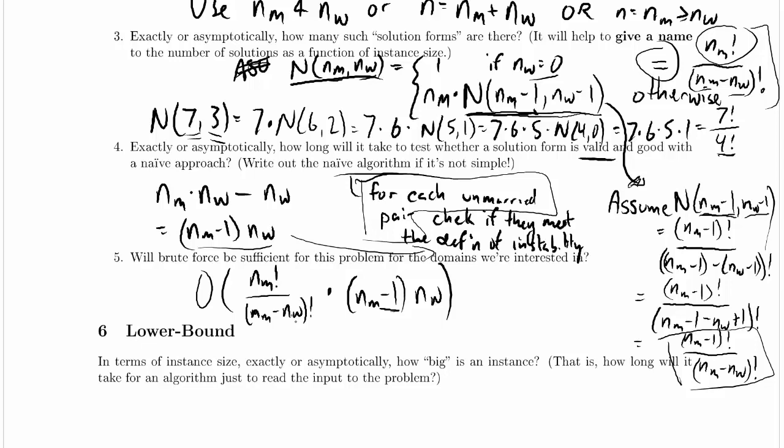In particular, if NW is large, say if NW is equal to NM, this goes to 0, and 0 factorial is equal to 1, and so we get this order NM factorial on the top, which is just as bad as with SMP, which makes sense, because if NW is equal to NM, it is SMP.